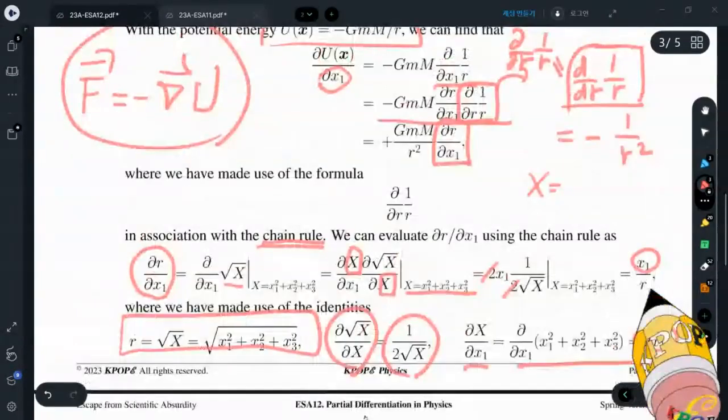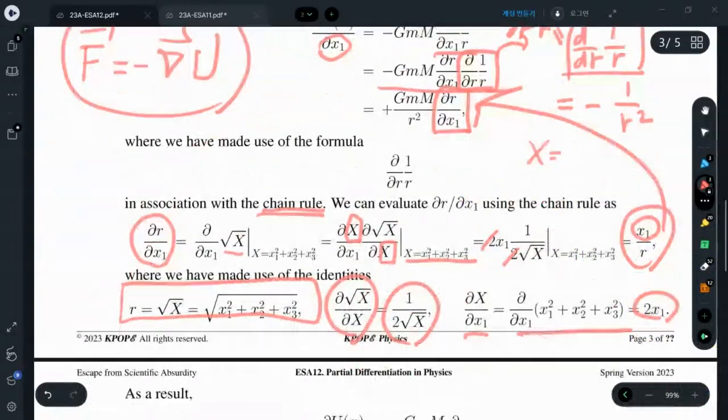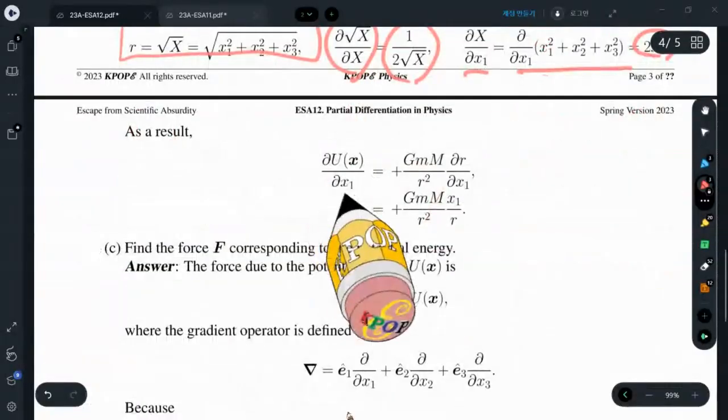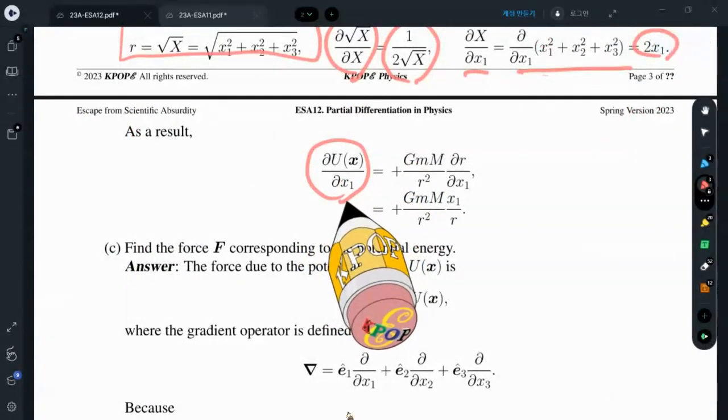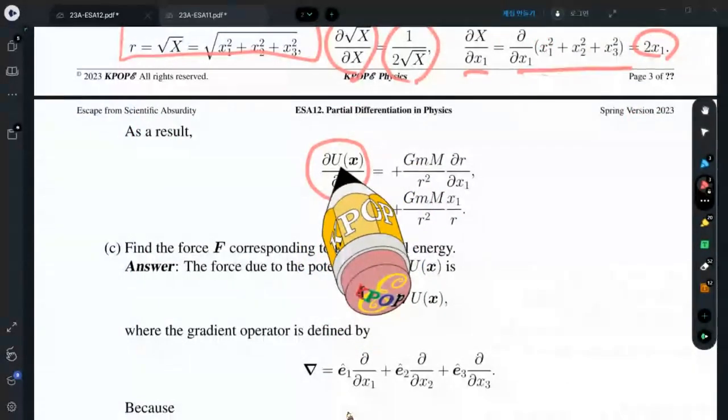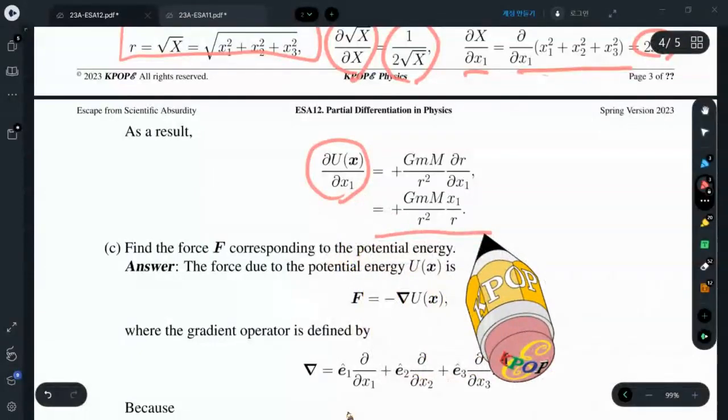Therefore, this x1 over r can be substituted here. As a result, the partial derivative of the gravitational potential energy with respect to x1 is found to be this.